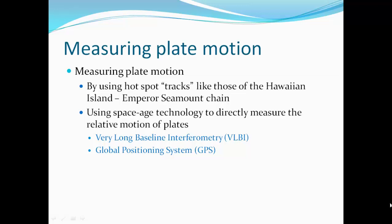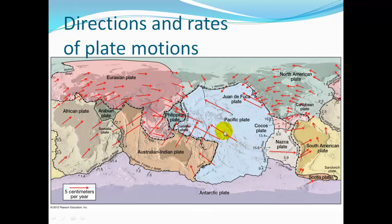We can measure plate motion by using hot spot tracks like those in the Hawaiian Islands and the Emperor Seamount Chain, and also using space-based technology like GPS and very long baseline interferometry to directly measure the relative motion of plates — both their speed and direction. In this diagram, the arrows point in the direction of movement, and the longer the arrow, the faster the plate is moving — about five centimeters per year, roughly the speed fingernails grow.